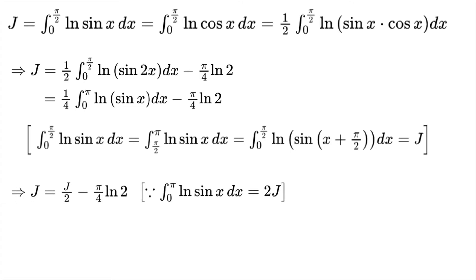We can write that J equals J/2 minus (π/4)ln 2, because the integral from 0 to π of ln(sin x) dx equals J plus the integral from π/2 to π of ln(sin x) dx, which equals 2J. So J becomes -(π/2)ln 2.